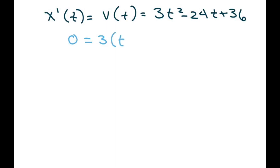So x prime of t or x prime of x equals your velocity of t, and that's going to equal 3t squared minus 24t plus 36. Now, so that's the derivative basically, and we're going to set it to 0 to solve for t. So we have 0 equals, I'm going to pull out a 3, so you get t squared minus 8t plus 12.